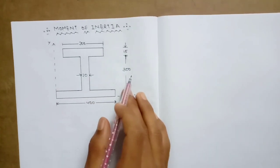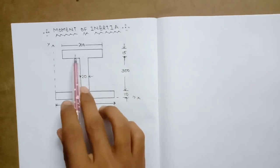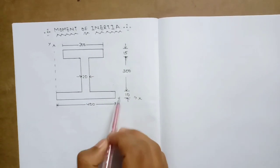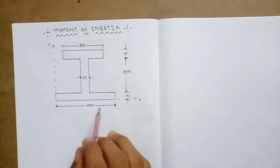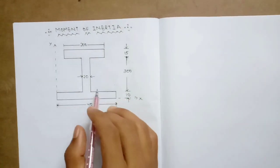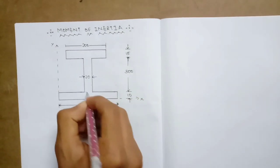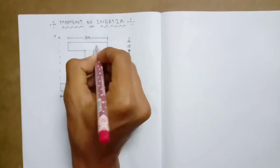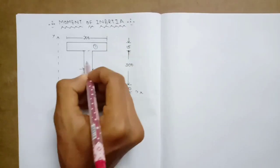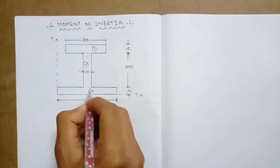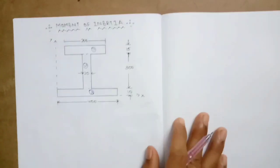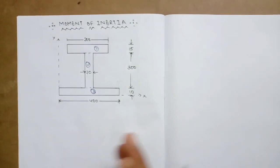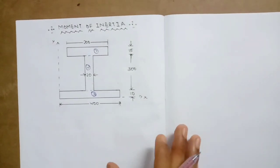The I-section is unsymmetrical. The dimensions are where the top and bottom flange are. Now I will divide the I-section into three rectangles. This is the first rectangle, second rectangle, and third rectangle. The table has three rectangles with their area, X values, Y values, X-bar, and Y-bar.